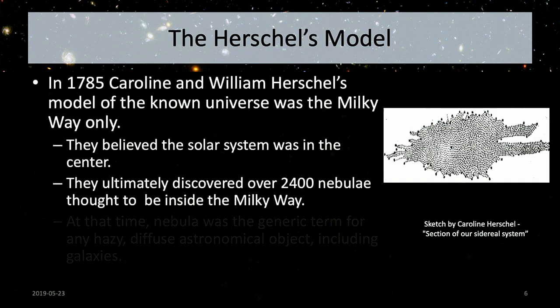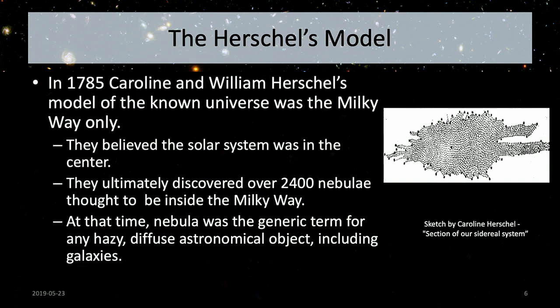Nevertheless, the Herschels discovered many things, including over 2,400 nebulae — big clouds of gas and dust thought to be inside the Milky Way. Nebula literally just means a sort of cloud, and at the time virtually anything hazy and cloud-like was called a nebula. So things we now refer to as galaxies would have been called spiral nebulae.